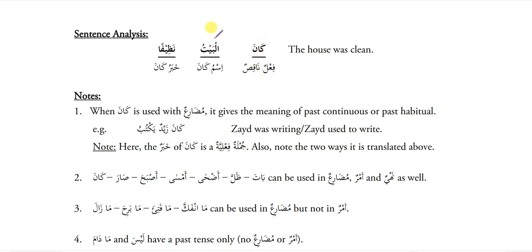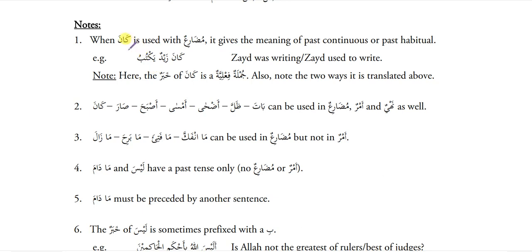Analysis: Laisa is af'al-e-nakisah. Al-aamil is ism of Laisa. Nashitan is khabar of Laisa. Kana is also af'al-e-nakisah. Manaamuhu is muzaaf muzaafilaih, ism of Kana. Manaaman sadikan is mawsook sifat khabar of Kana. Amsa is fail naqis. Al-ghaniyu is its ism, faqiran its khabar. When Kaana is used with Muzareh, it gives the meaning of past continuous or past habitual. Kaana za'idun yaktubu — Zayd was writing, or Zayd used to write.